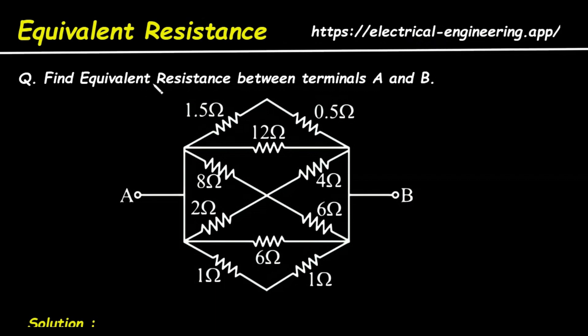Question: Find equivalent resistance between terminals A and B. For this circuit, we have to determine its equivalent resistance.